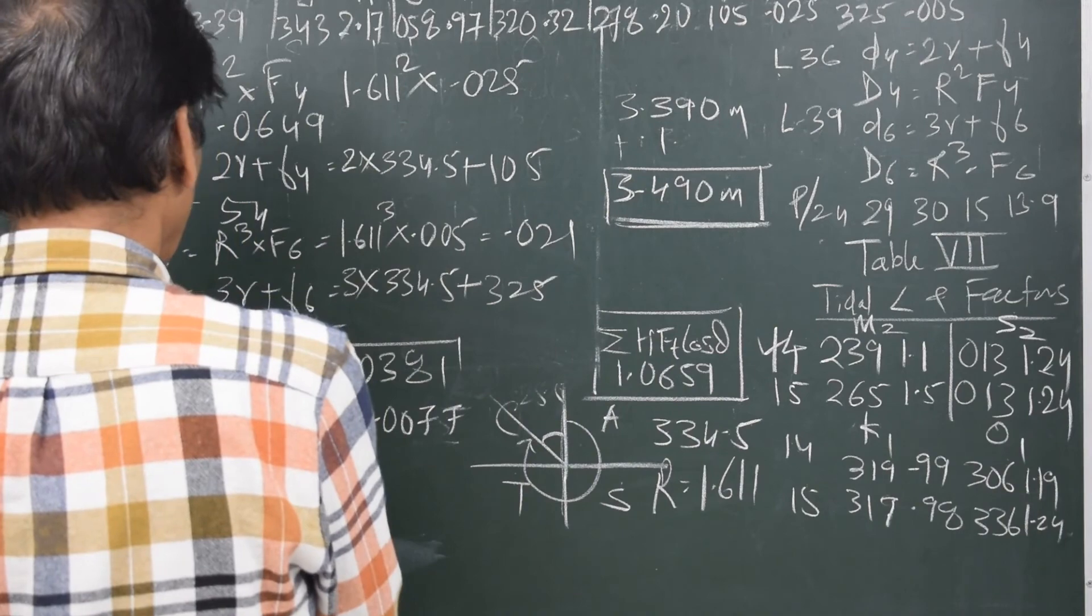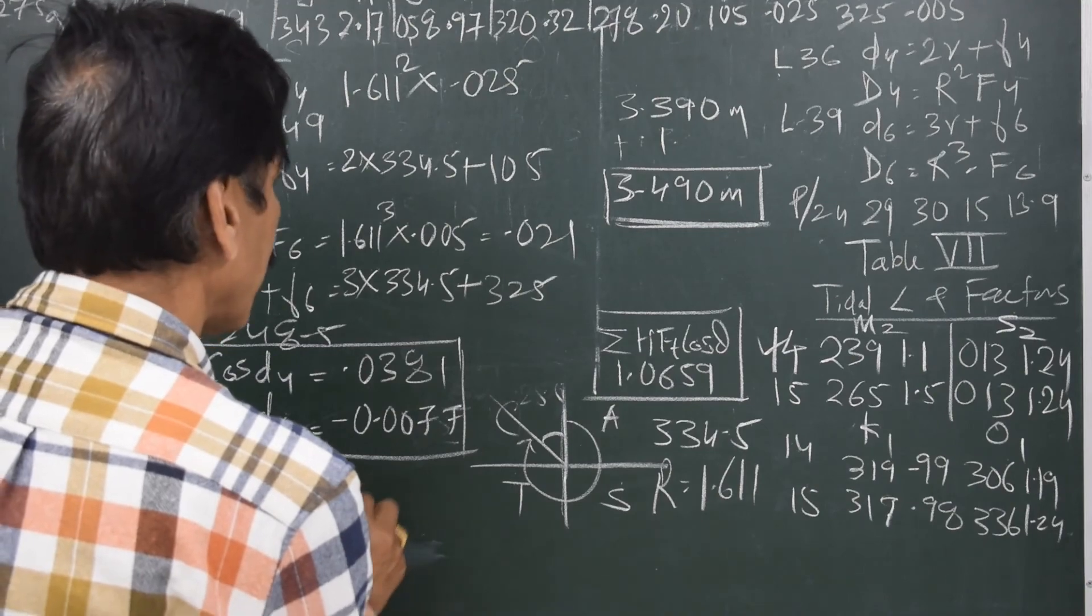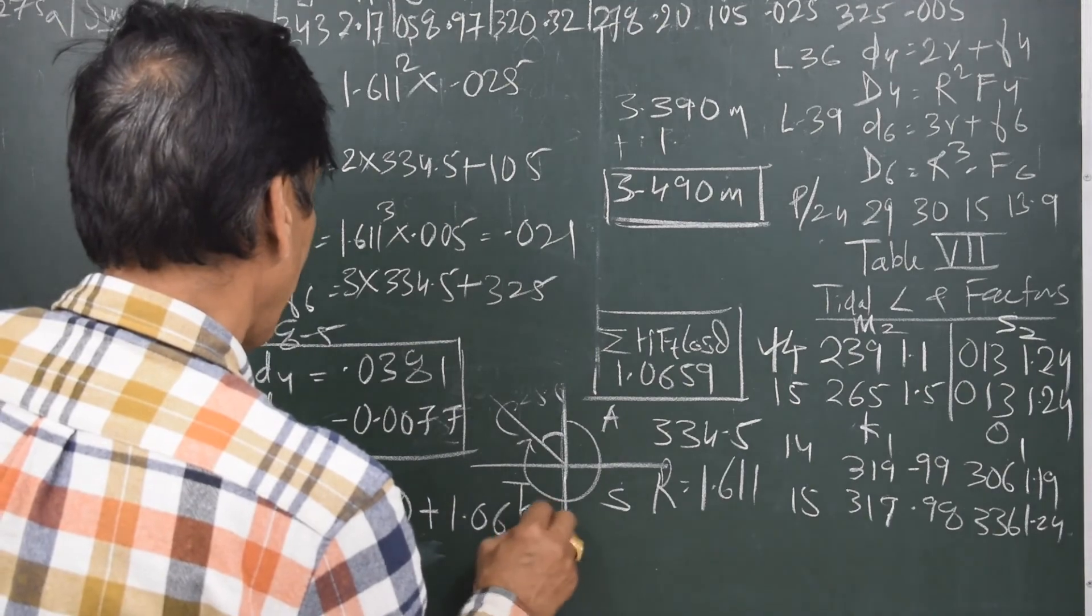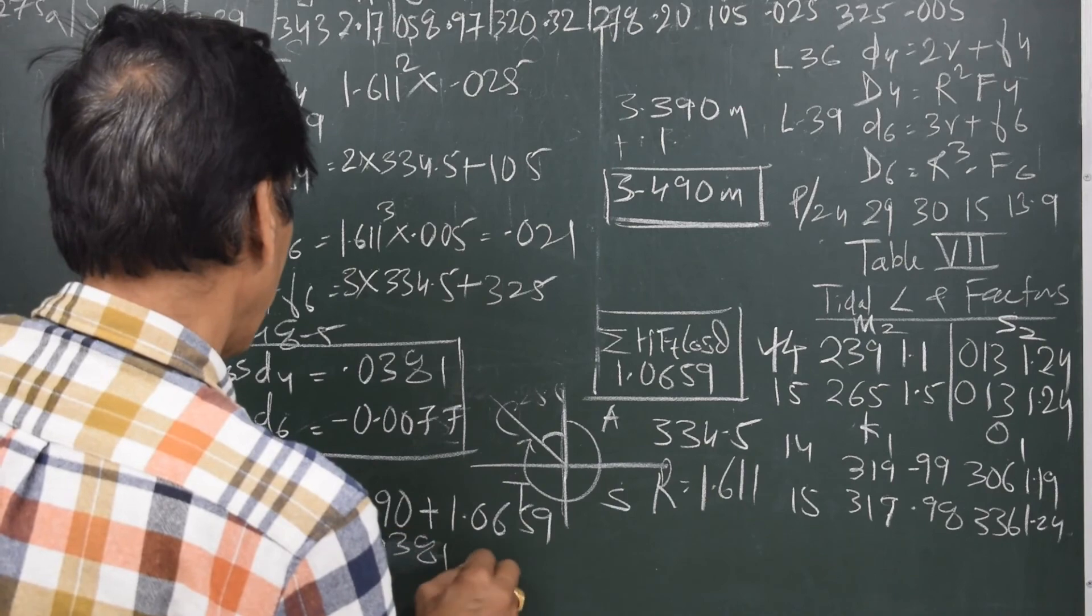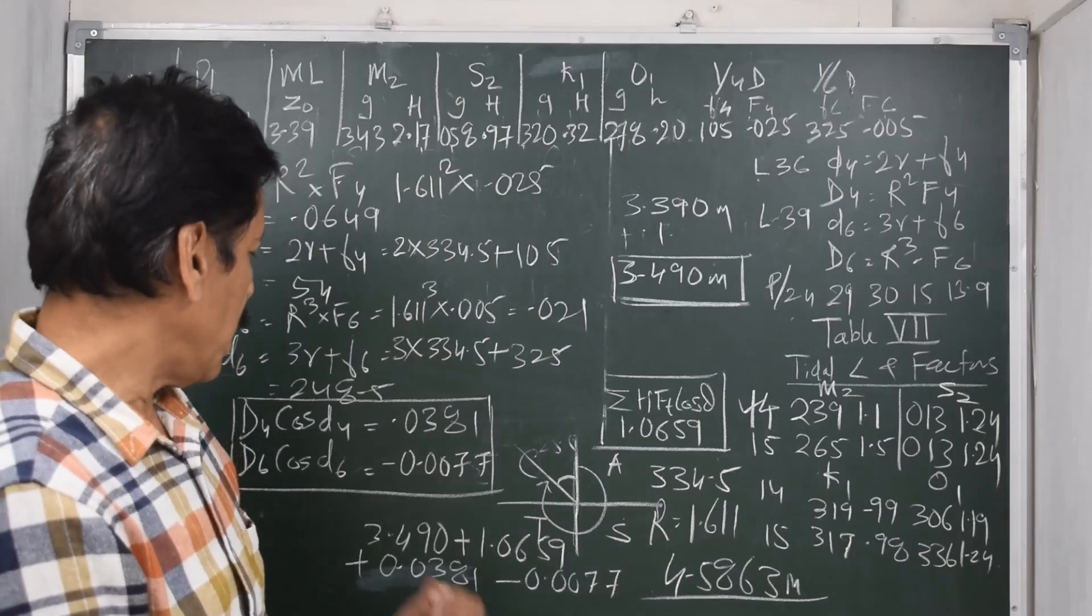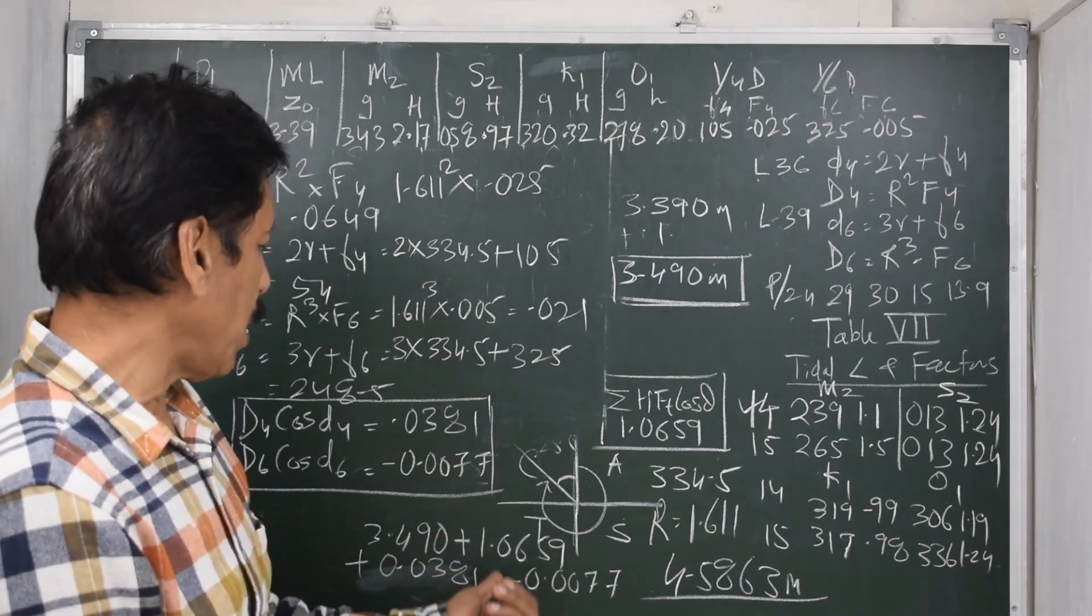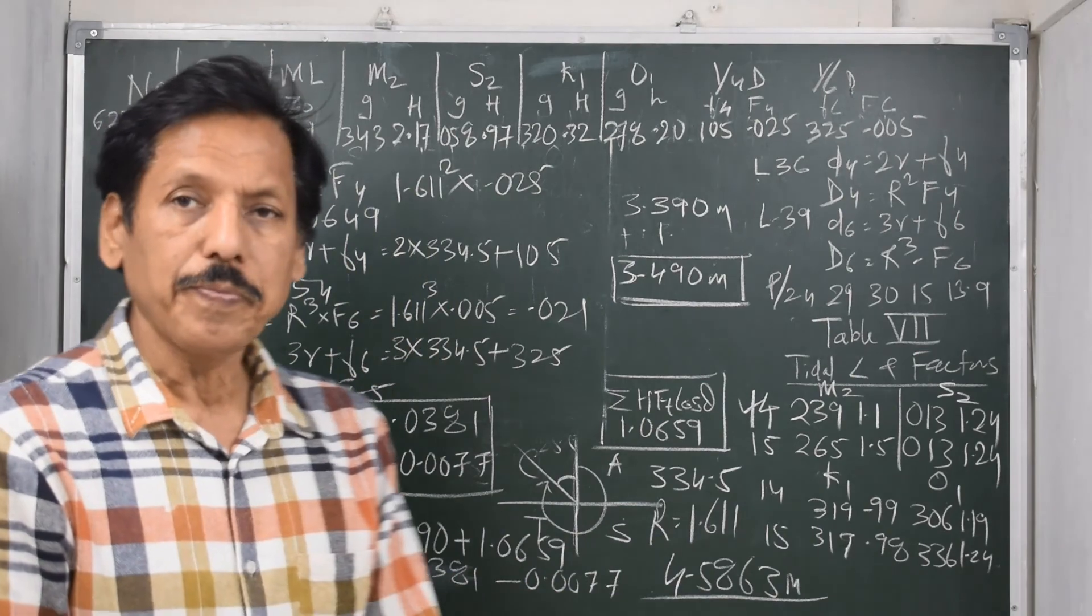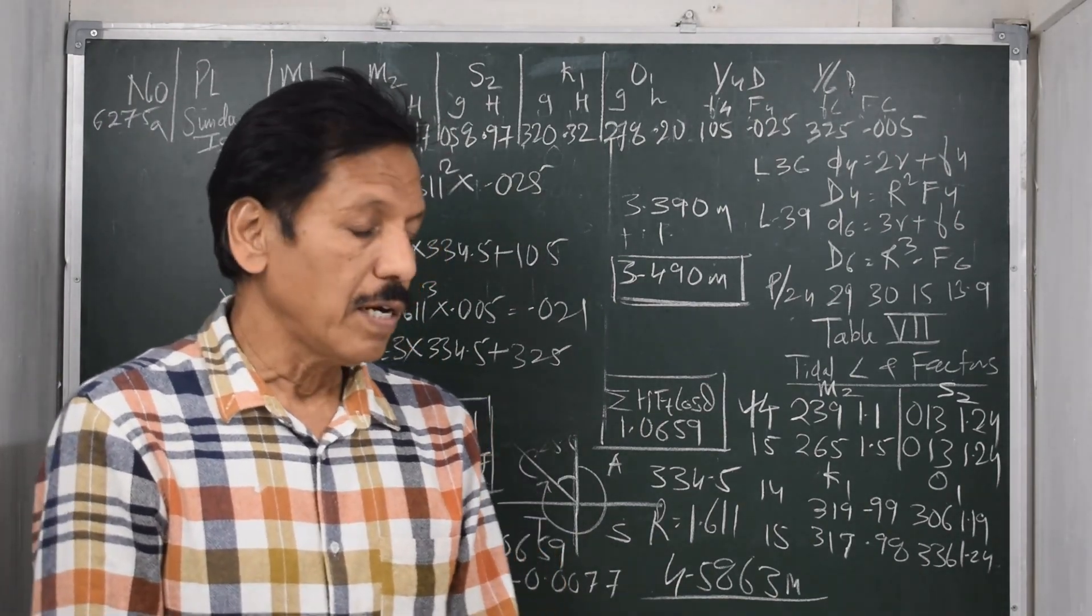Apart from these two things which we calculated earlier, now we have D4 cos D4 and D6 cos D6. The total will be 3.490 plus 1.0659 plus 0.0381 minus 0.0077, which equals 4.5863. The height of tide at Sunday Island at 8 o'clock on 14th February.